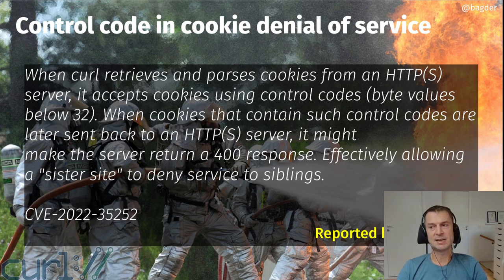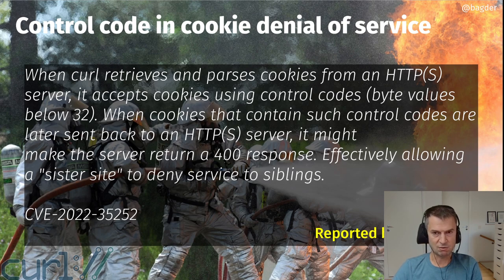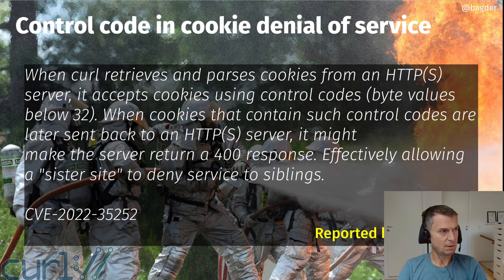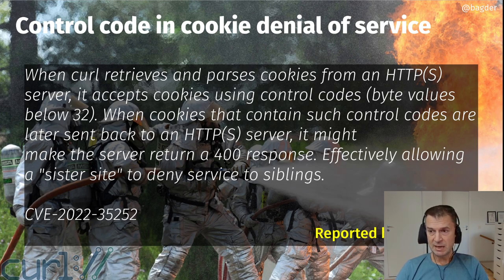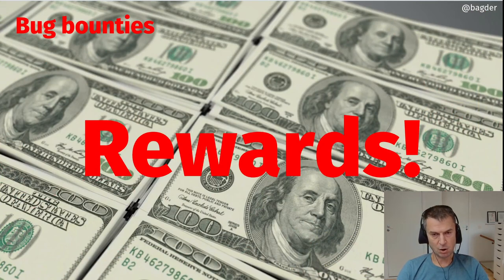Most servers these days reject any request that contains control codes, so curl receiving those cookies and sending them back would get a 400 response — essentially a denial of service. If it only affected the particular server that set the cookies it wouldn't have been a problem, but since you can set cookies for sibling sites — for example, a.example.com can set cookies that b.example.com would receive — one server can basically deny service of another service via the cookie.